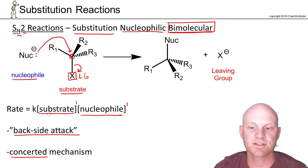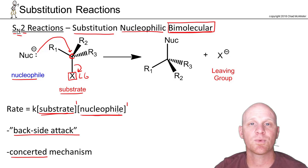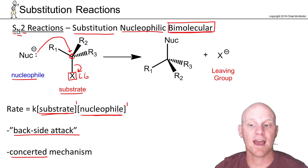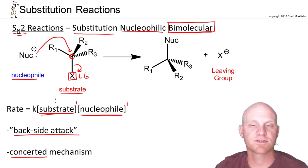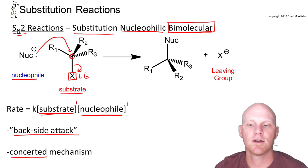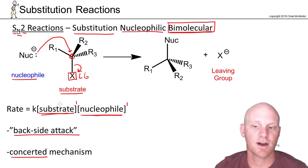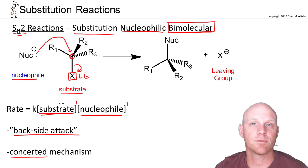The rate is proportional to both substrate and nucleophile concentrations. Doubling either doubles the rate; doubling both quadruples the rate. If you double the amount of solvent while keeping moles of substrate and nucleophile constant, both concentrations are cut in half, reducing the rate to one-fourth of its initial value.